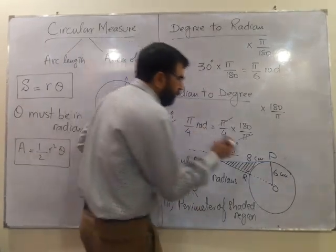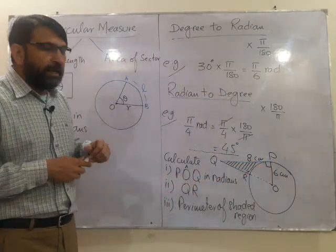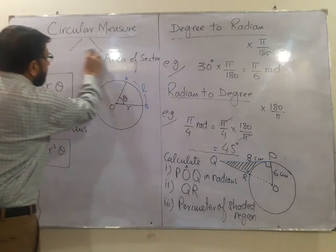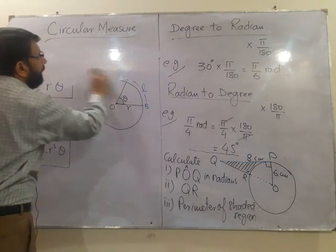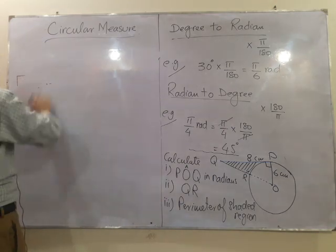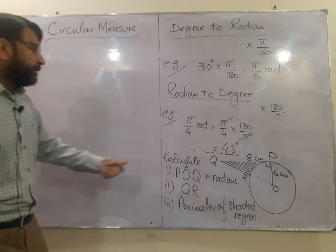We know by the angle properties that tangent makes an angle of 90 degrees with a line to the center. So this angle is going to be 90 degrees. Now if you deal with this triangle, it has become a right angle triangle. So if you are dealing with a right angle triangle it is quite simple for us to find out the first part.